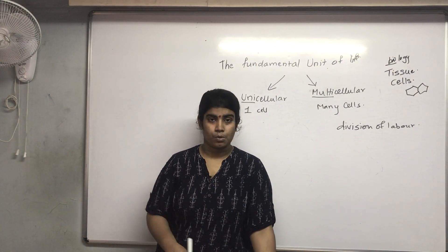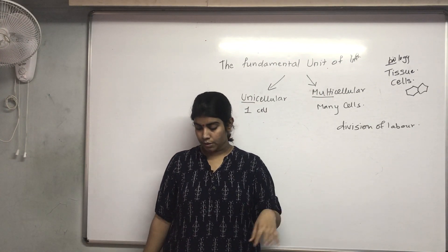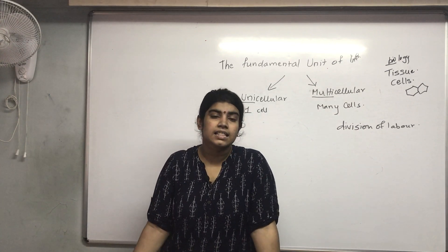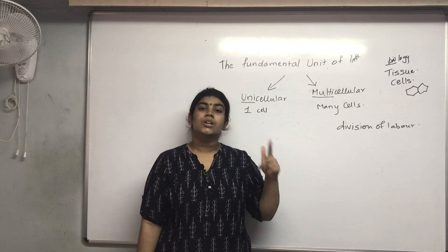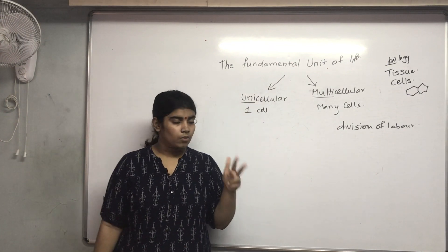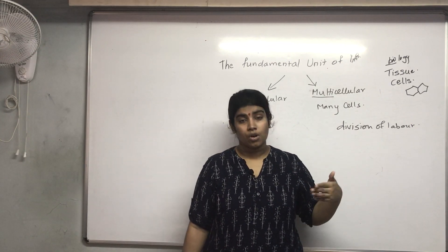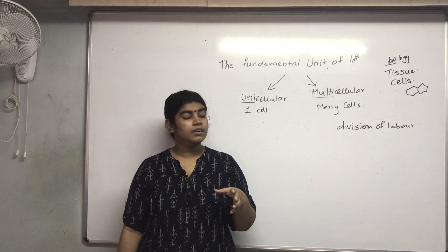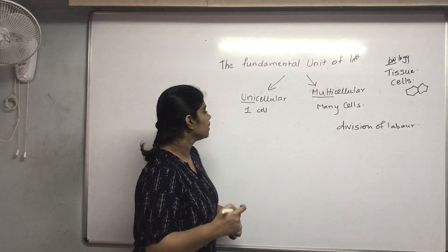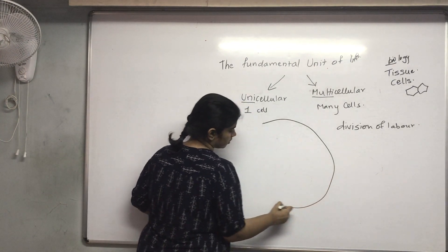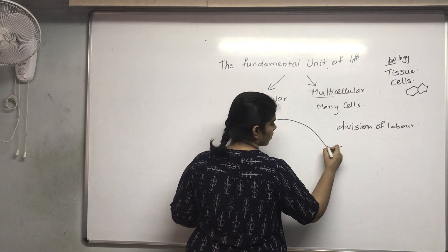Now we will look at what the cell is made up of — its structure. The cell is made up of various things: the cell wall, the cell membrane, the cytoplasm or protoplasm, the nucleus, and various other organelles. The very first thing observed when looking at a cell is the plasma membrane.